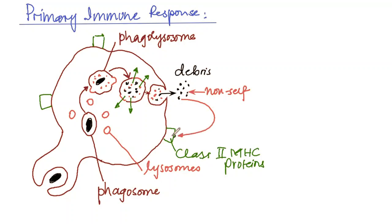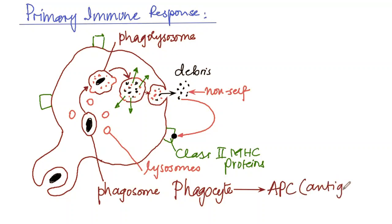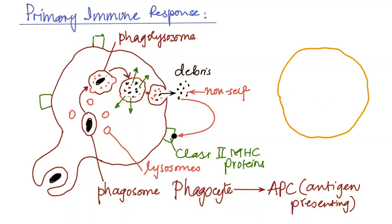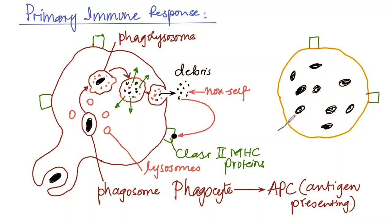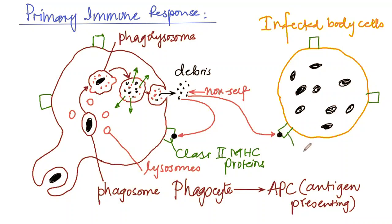These proteins are called class 2 MHC proteins. The antigens released in the debris stick to the class 2 MHC proteins, turning the phagocyte into an antigen presenting cell. Antigen presenting cells are cells which have antigens sticking to class 2 MHC protein on their outer surface. Additionally, MHC proteins can appear on the surface of infected body cells, where non-self antigens stick to class 1 MHC proteins, making infected body cells another type of antigen presenting cell.